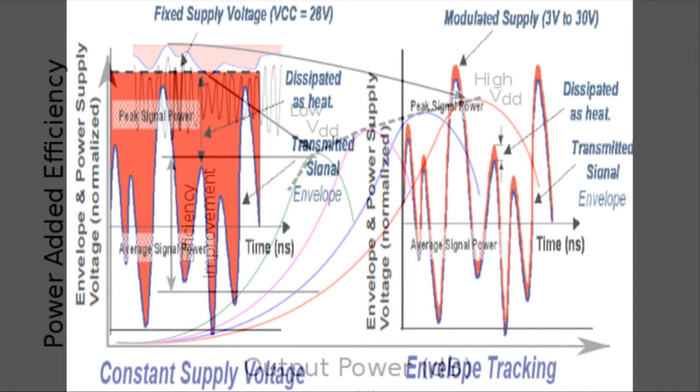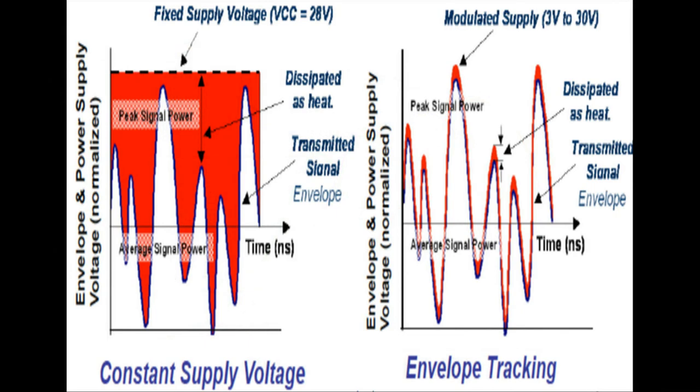Here we can see how the supply modulation or envelope tracking saves us the DC power or the power which is lost. We can clearly see when we have a constant supply voltage, a lot of power is burned when the output power requirements are low. In the case of envelope tracking, as we can see on the right, there is a huge amount of saving of DC power at low input power levels.